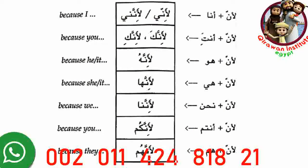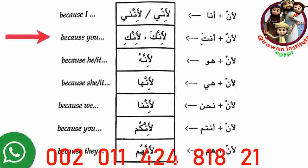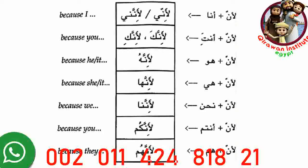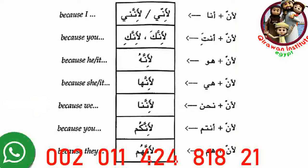Let's examine the chart. To say 'because I,' say la-enni or la-enna ni. 'Because you' (male): lienna ka. 'Because you' (female): lienna ki. 'Because he' or 'because it': lienna hu. 'Because she' or 'because it': lienna ha. 'Because we': lienna na. 'Because you' (plural): lienna kom. And 'because they': lienna hum.